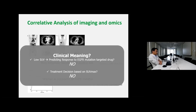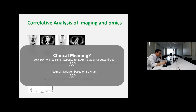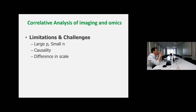Let's think about the clinical meaning of previous radiogenomic studies. One example shows that low SUV was associated with EGFR mutation, but we cannot predict the response to EGFR-targeted drugs, because the accuracy of EGFR mutation prediction is very low. We cannot change the clinical strategy for EGFR mutation testing by using FDG PET. The predictive value is very low, and we did not decide treatment strategy according to SUV max.